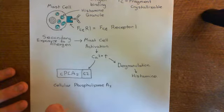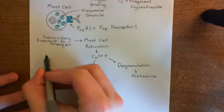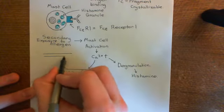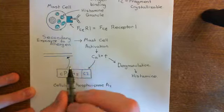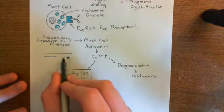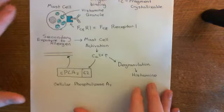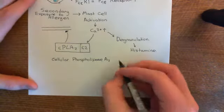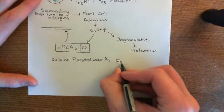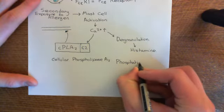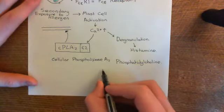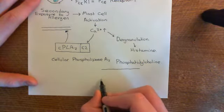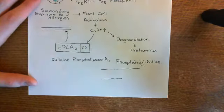Once cellular phospholipase A2 has calcium bound to the C2 domain, the enzyme translocates to the phospholipid bilayer. Once it gets there, it's going to start breaking down a component of the phospholipid bilayer known as phosphatidylcholine. Phosphatidylcholine is a type of phospholipid — a modified phospholipid. Let me show you the structure of a normal phospholipid and then how you can modify it to turn it into a phosphatidylcholine molecule.